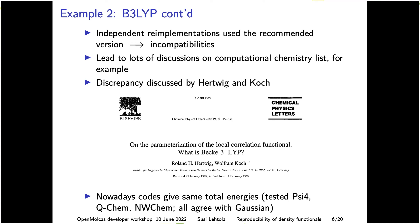B3LYP was published in 1994, and three years later a paper explained what B3LYP actually is — based on the VWN3 version not described in the original paper. Nowadays all codes give the same energy. I've run CFOUR, QCHEM, and WCAM — all with independent DFT implementations — and they all agree with Gaussian to very high accuracy.